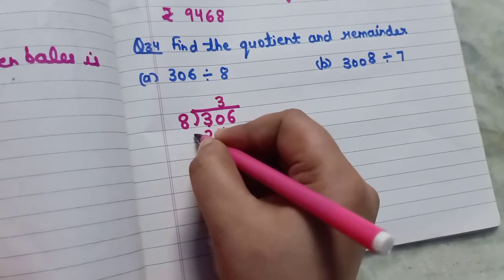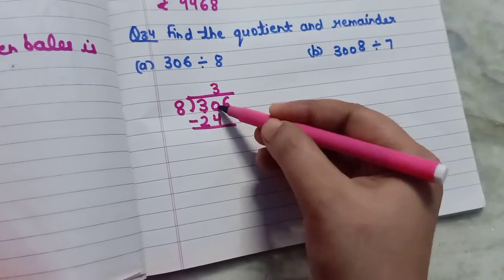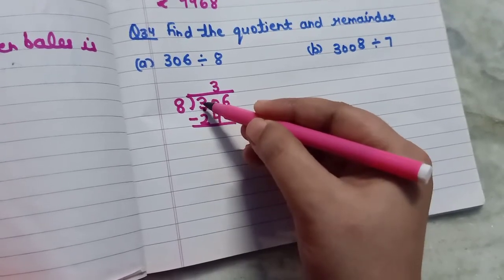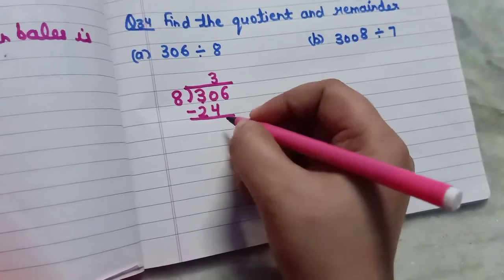Now after writing the digits under the above digits you will subtract them. 30 minus 24. 0 is smaller than 4, you will borrow from 3. 3 becomes 2 and this becomes 10. 10 minus 4 will be equal to 6.